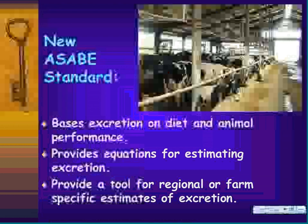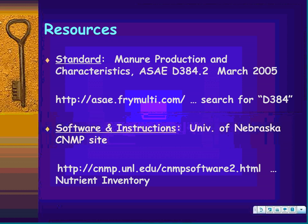The new standard provides a tool that can do both regional planning and farm-specific estimates of excretion — that was a real need originally expressed by this group. If you want a copy of the standard, the top address shown is where to find it; it should be available as a free PDF download. The software we're going to look at comes from the University of Nebraska CNMP website and is also available for free.